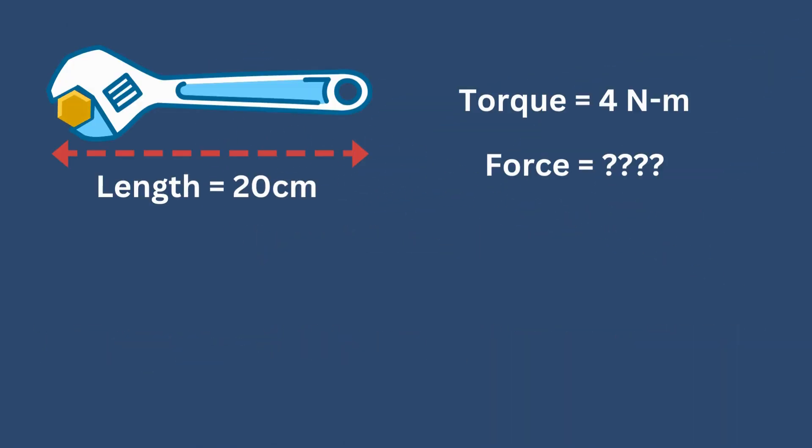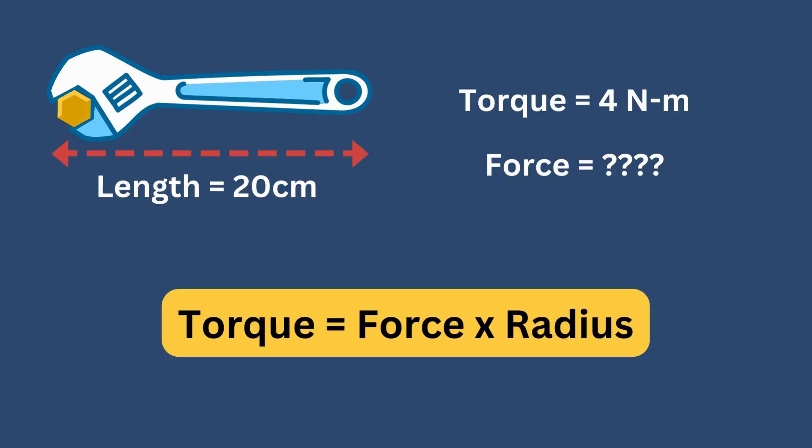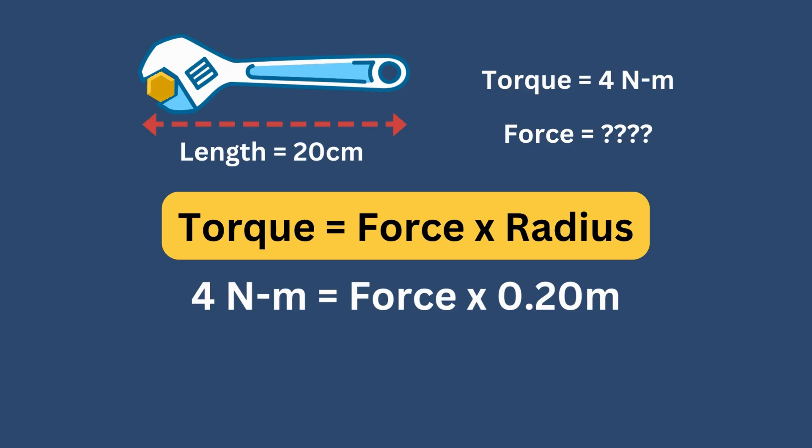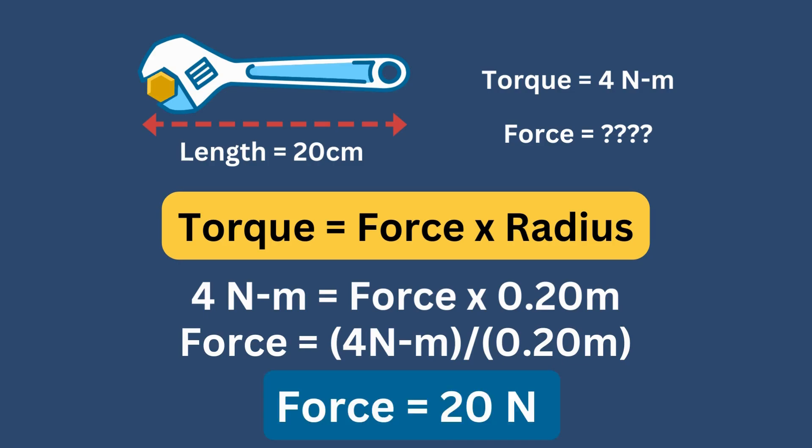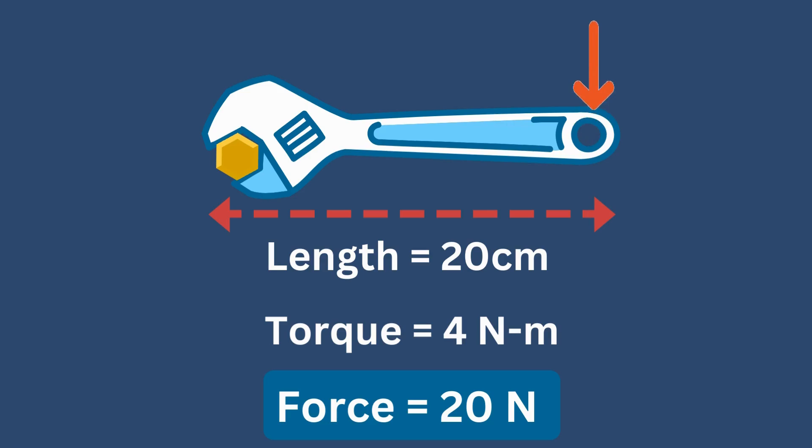We can solve this problem by using the equation mentioned earlier. Torque equals the product of force and radius. Thus, we can write, 4 newton meters equals force times 0.20 meters. So, force equals 4 newton meters divided by 0.20 meters. Finally, we can solve for the amount of force which equals 20 newtons. 20 newtons is the amount of force you need to turn the wrench, given that you hold it on the edge.